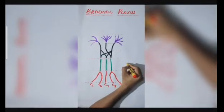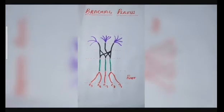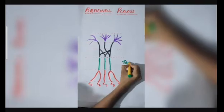The 5 roots of the brachial plexus are the anterior rami of the lower 4th cervical and the 1st thoracic nerve root.